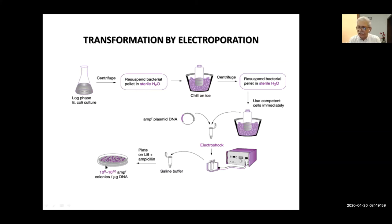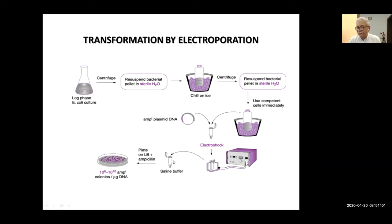Electro-competent cells are actually easier to prepare — you are just suspending the pellet in cold water, spinning it two or three times, then finally suspending the pellet in 200 microliter volume. After the electric shock, you add one ml of Luria broth because the shock is very bad for the cells — very high voltage — and you need to stabilize them with nutrition. So at the end of transformation, both in case of electro-competent or chemically competent cells, the total volume of the transformation mixture is 1.2 ml.